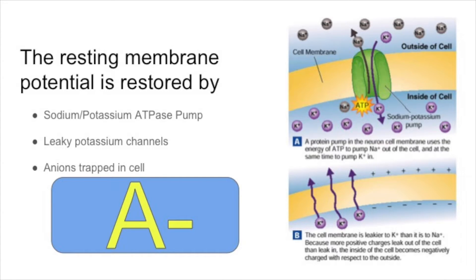The membrane is more permeable to potassium than sodium. Therefore, more potassium leaks out of the cell than sodium enters. This leaking of potassium out of the cell helps keep a negative resting membrane potential.